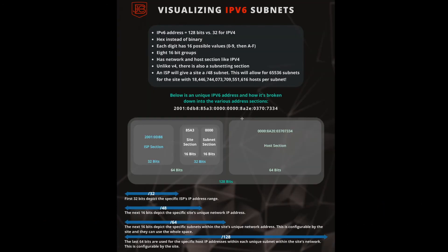If we were to write this out, we'd have the full address followed by a forward slash and 64 at the end, since this is going to be a 64-bit subnet mask.